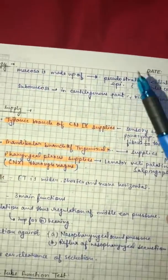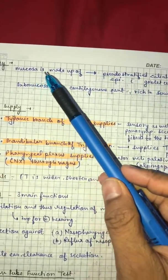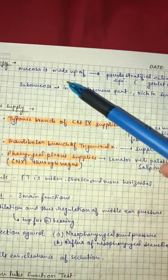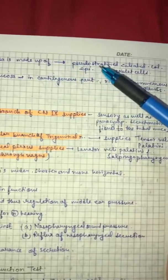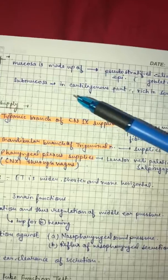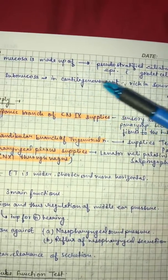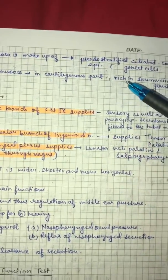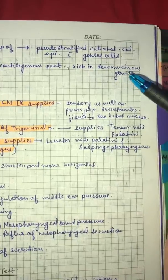Then histologically, if we see, there are two layers: mucosa and submucosa. Mucosa which is made up of pseudostratified ciliated columnar epithelium with goblet cells. And submucosa in cartilaginous part, submucosa layer rich in seromucous glands.